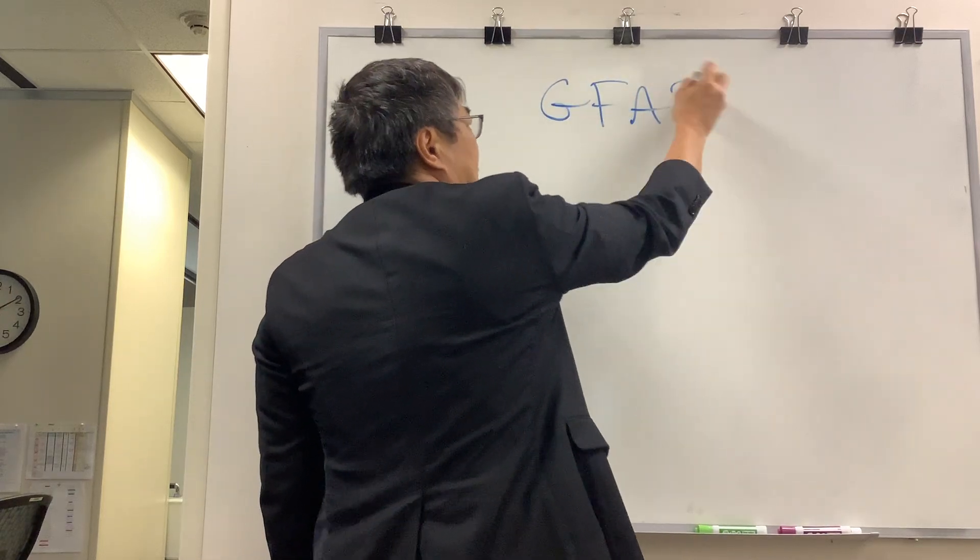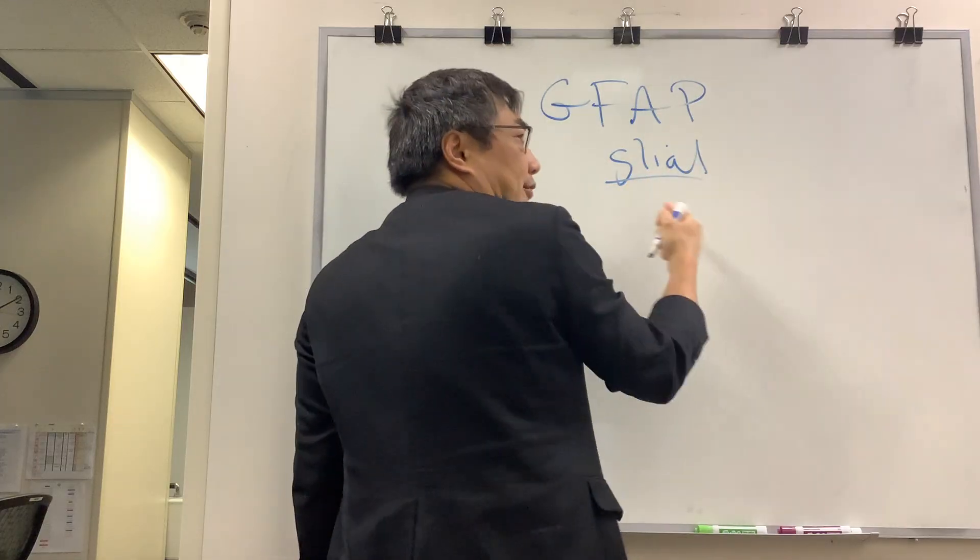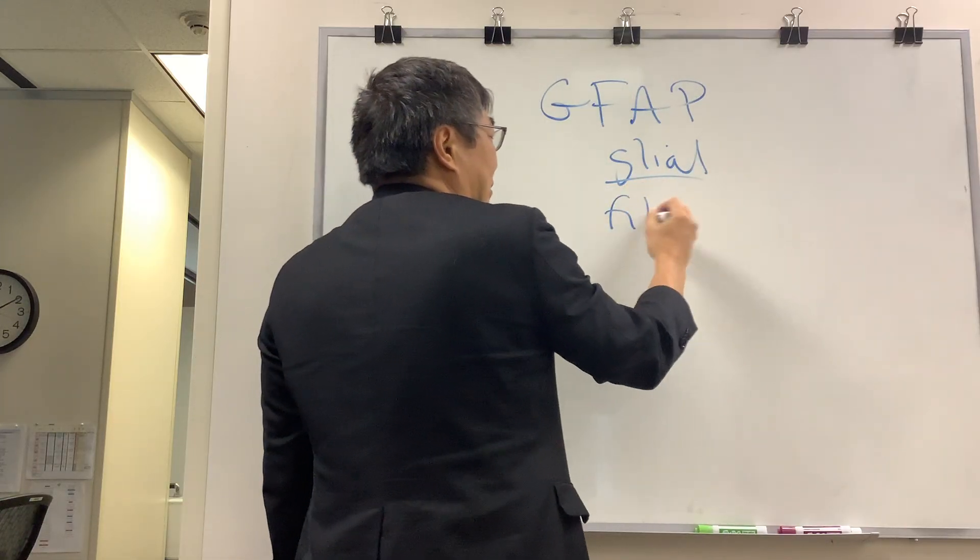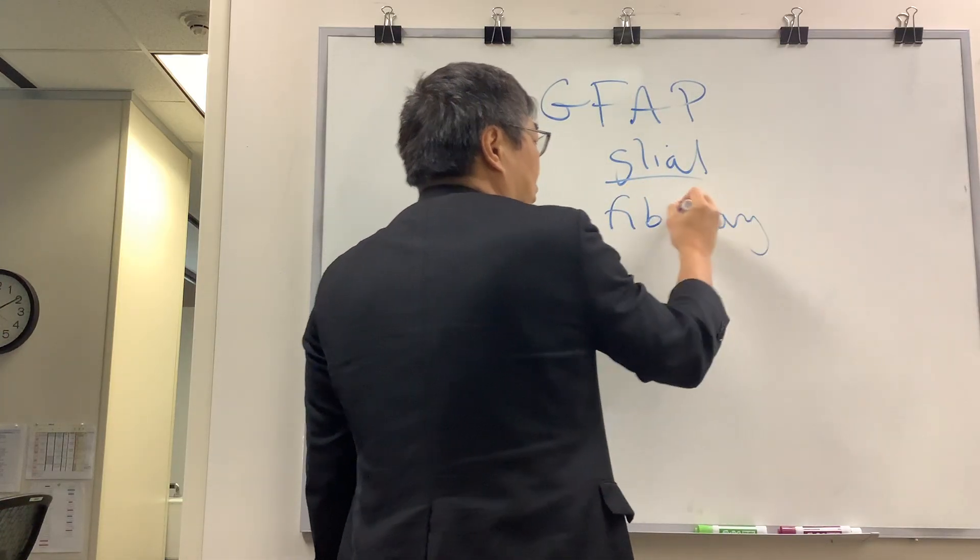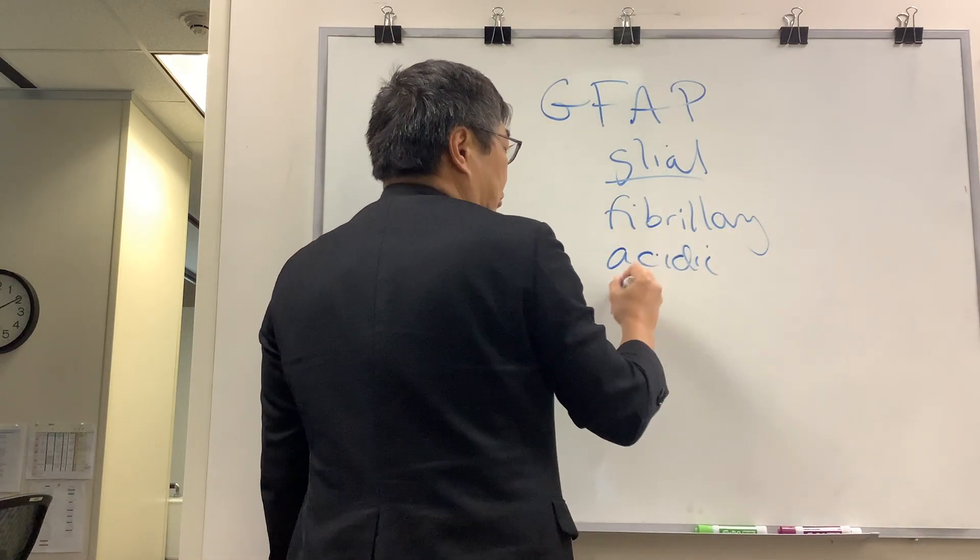We're going to be talking about GFAP, which is glial - that's glia in the central nervous system in your brain. Fibrillary, which is also a bad word, you've got some sort of substance. Acidic protein.